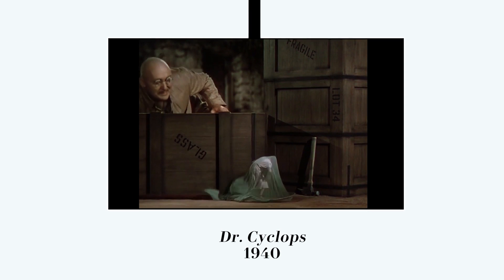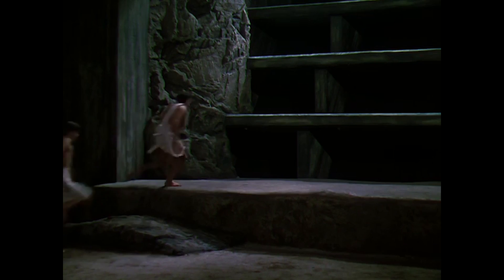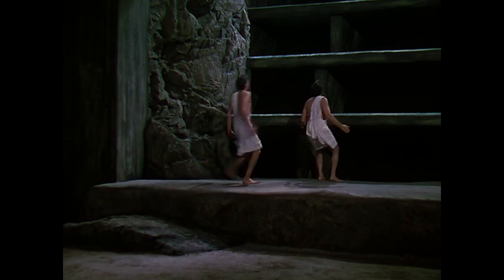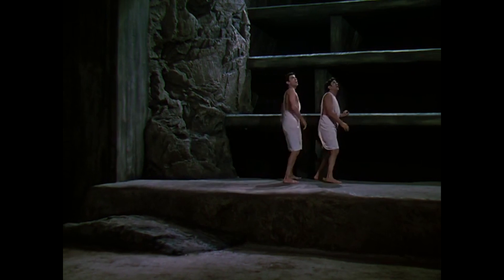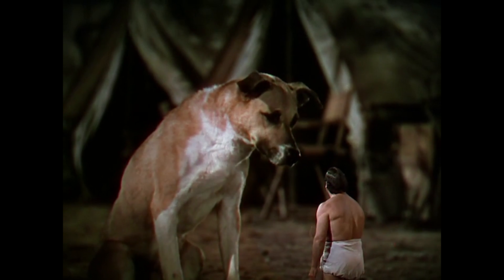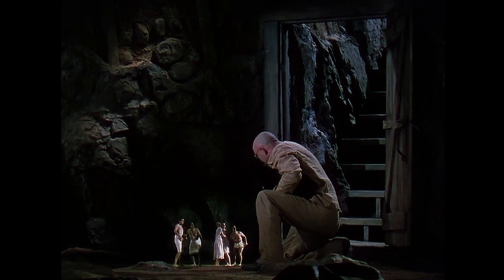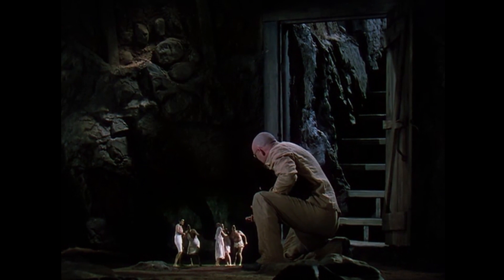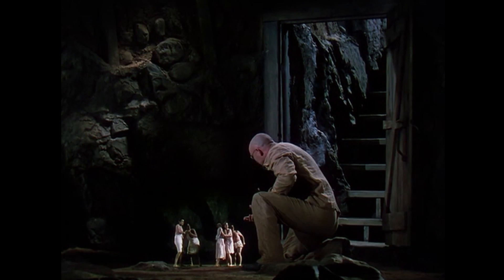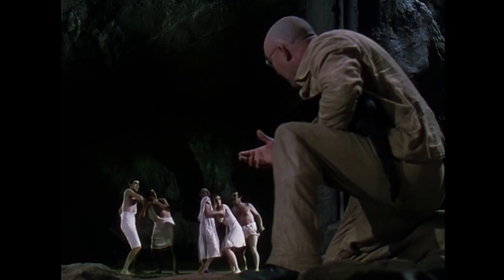In 1940, Dr. Cyclops was being done, and that was in color. The Williams process wasn't really suitable for color, and so a lot of the solutions in Dr. Cyclops were to use rear projection. The background projection image was big, the people in the foreground appeared small, and in the final shot you saw the mix of the scales.